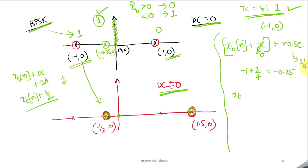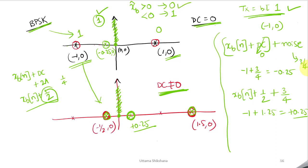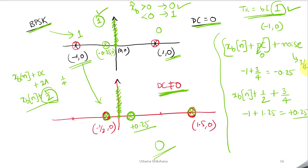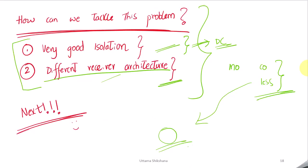Now what happens with DC? Let's say a DC component of 1/2 is added, plus noise of 3/4. The transmitted value is −1, so we get −1 + 1/2 + 3/4 = +0.25. In the presence of DC, the sample lies at +0.25. Using the same decoding strategy, this is a positive quantity, so it is decoded as zero. But what we transmitted is one and we decoded zero — this is an error. That's how errors are introduced by the unwanted DC component in the baseband.